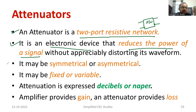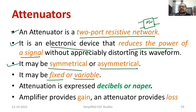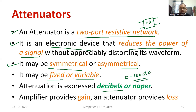Attenuators are available in symmetrical and asymmetrical forms. There are also fixed type and variable type attenuators — both varieties are available. Usually, attenuator capacity is expressed in terms of decibels, for example 0 to 100 dB. In some cases, neper is also another unit used. So attenuators can be rated in terms of decibels and neper.